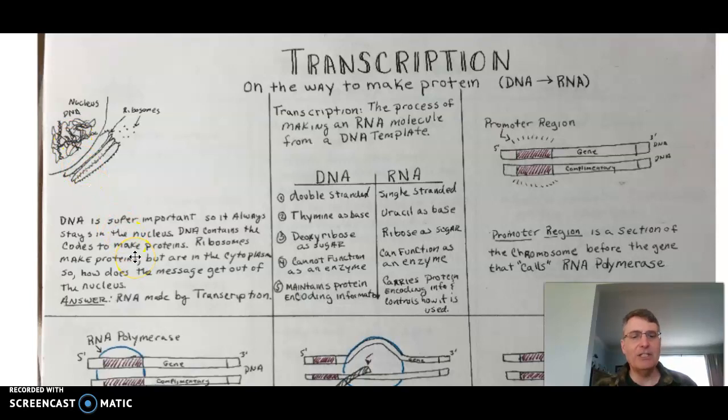How can we do that when DNA cannot leave the nucleus? The answer is you need some way to get the message out, and that's through RNA. RNA is made through the process of transcription. Basically, transcription is the process of making an RNA molecule from a DNA template. The basic differences: DNA is double stranded, RNA is single stranded.